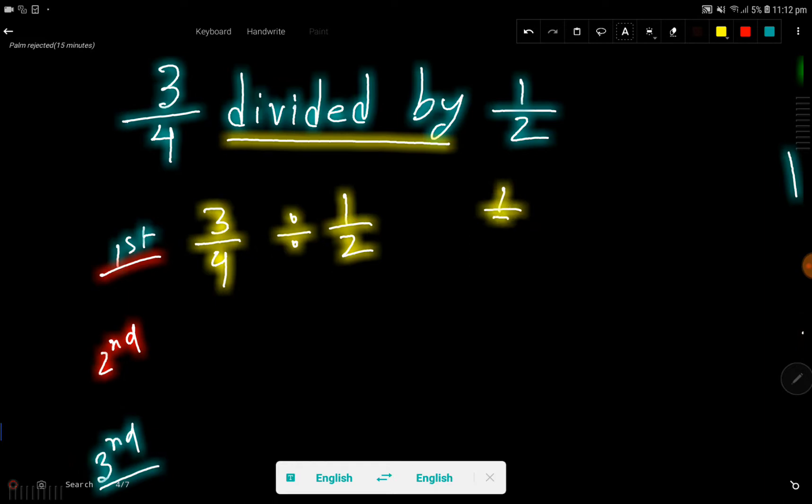The reciprocal fraction of 1 over 2 equals 2 over 1. You just have to interchange between numerator and denominator.